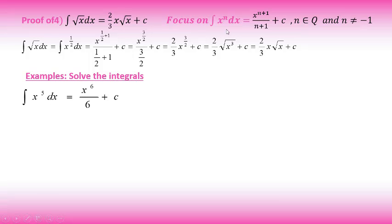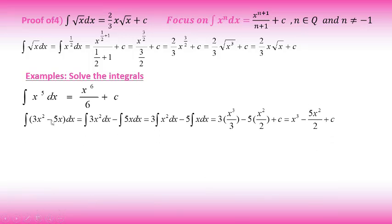Application examples: ∫x⁵ dx — direct application of the basic property with n = 5, add 1, giving x⁶/6 + c. For a more complex integral, distribute the integral over addition and subtraction. The constant is taken outside the integral. This reduces to: 3∫x² dx − 5∫x dx, applying the basic property, giving (3x³/3) − (5x²/2) + c = x³ − (5x²/2) + c.